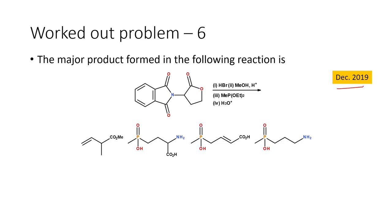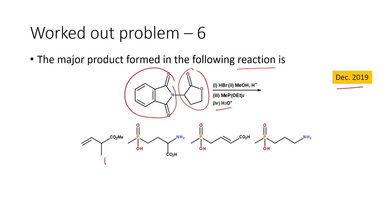Let us move on to the next problem, which appeared in December 2019. The major product formed in the following reaction: we have a lactone where one nitrogen is protected as the phthalimide group. The first step is reaction with HBr, second step is reaction with methanol under acidic conditions, third step is reaction with methyl phosphonite compound, and the last step is hydrolysis under acidic conditions.